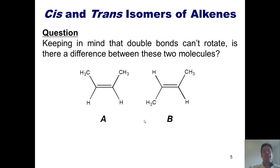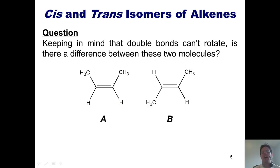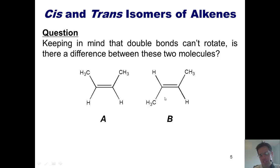You'll note that of course there's a difference. In this particular example A, this methyl and this methyl are closer to each other, keeping in mind that this carbon-carbon double bond does not rotate, so these are frozen in place, unlike single bonds which can rotate freely. In example B, this methyl and this methyl are further away from each other because one of them is on the opposite end of the double bond.